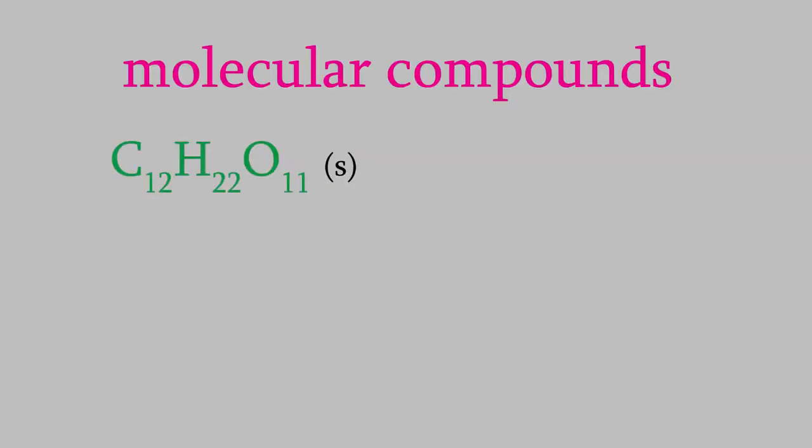Take sucrose, for example. Sucrose has the formula C12H22O11. Those elements are all non-metals, which means sucrose is a molecular compound. When molecular compounds dissolve, the molecules stay in one piece. So, our reaction looks like this. If we start with a million sucrose molecules, we're going to get a million dissolved sucrose molecules.